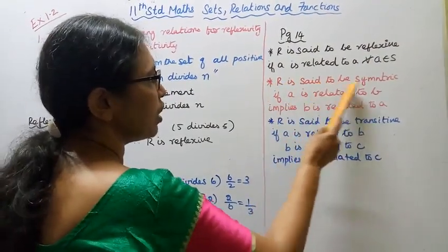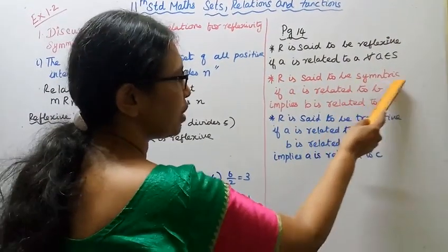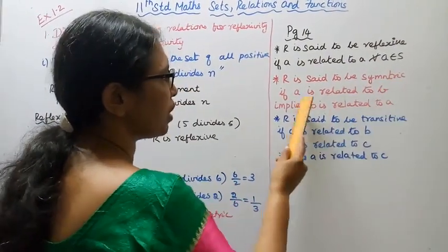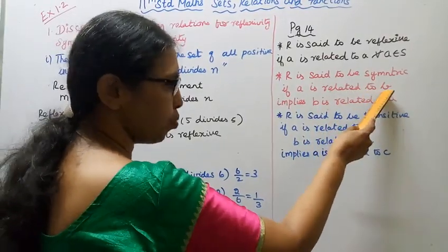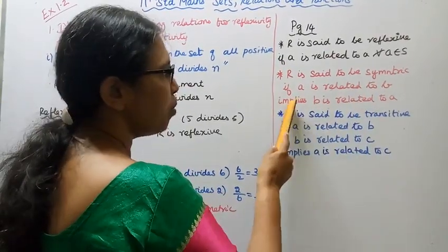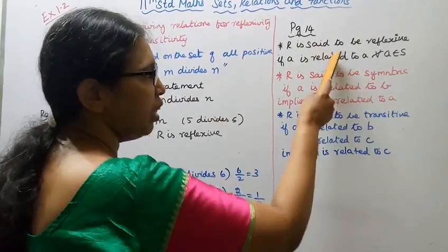R is said to be symmetric: if A is related to B, then B is related to A.